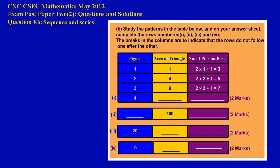Now here they have it, my friends, in part B they're asking us to study the patterns in the table below and on your answer sheet complete the rows numbered 1, 2, 3, and 4. The breaks in the columns are to indicate that the rows do not follow one after the other. That's a very important piece of information.